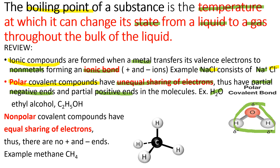Hydrogen has a positive charge because oxygen attracted all the electrons from hydrogen. Similarly, with ethyl alcohol, the presence of oxygen in the molecule — being more electronegative — attracts electrons from hydrogen, giving oxygen a negative charge and hydrogen a positive charge on its end.